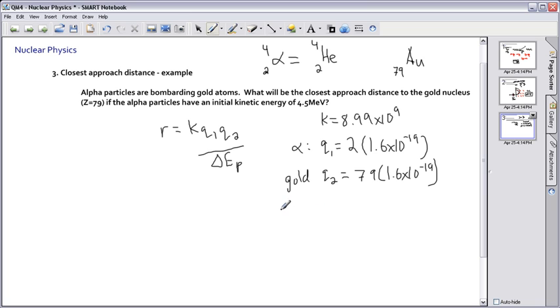And then we're going to have to know about our delta EP. So we better figure that out as well. Now delta EP is going to be the same as our EK, which is going to be 4.5.